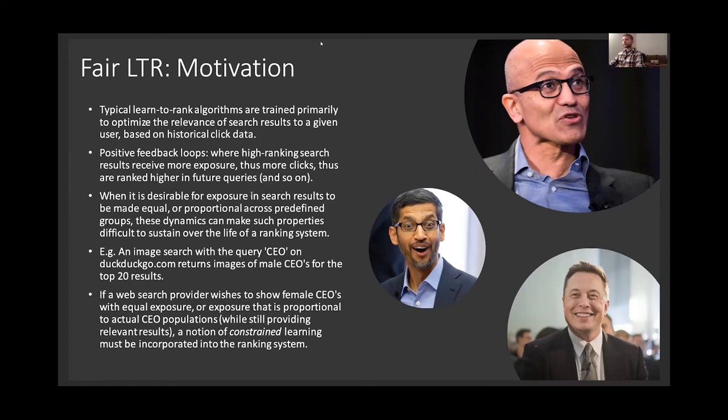Now on the other hand, sometimes it's desirable to have fairness of exposure in your ranking results across some predefined groups. So as a concrete example, I did a query on DuckDuckGo today, just CEO, and the images that it returned were for the first page all male CEOs for the top 20 or so results. Then I tried on Google and the same query gave me roughly half and half male and female CEOs. And so apparently Google is doing something along the lines of what we're trying to do here.